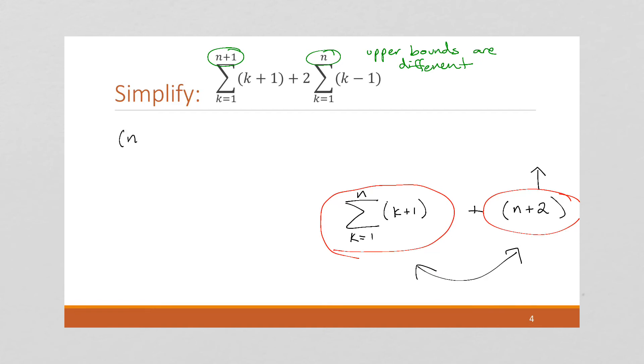So, we're going to have n plus 2 plus the sum of k equals 1 to n of k plus 1. That's all of that.